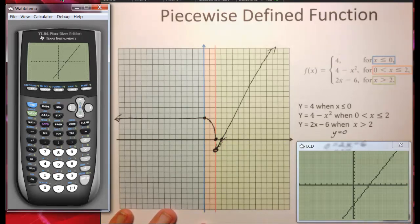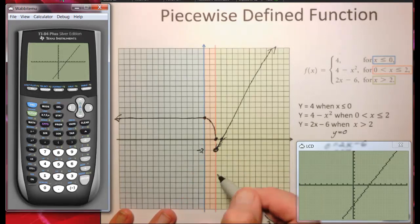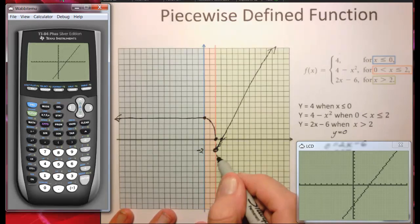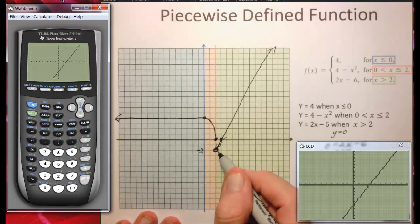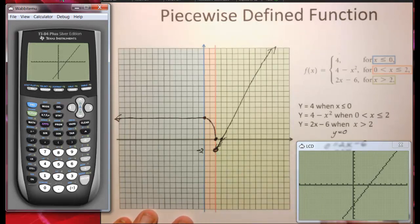The domain will be negative infinity to positive infinity. What about the range? Well, the range starts here at y equals negative 2. However, y doesn't actually equal negative 2 there because x doesn't actually equal 2. So our range...